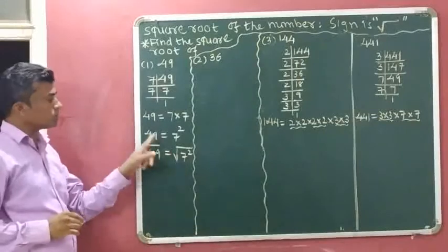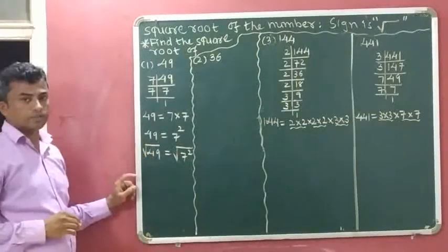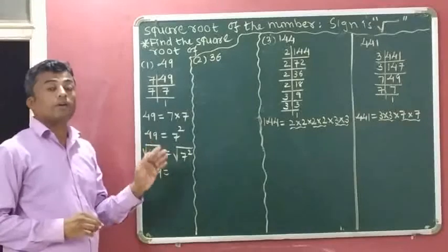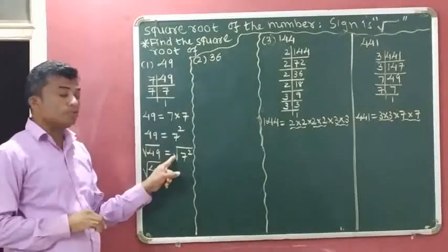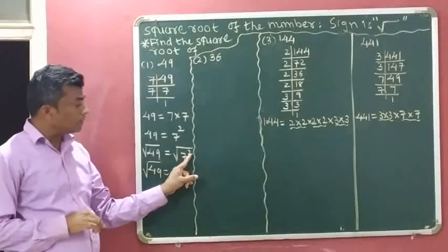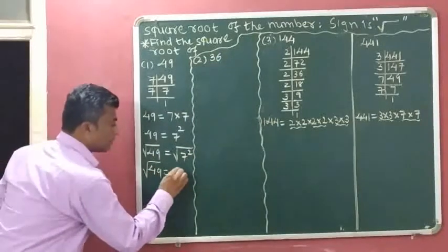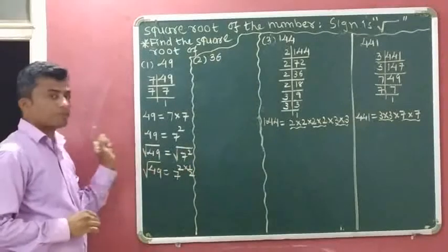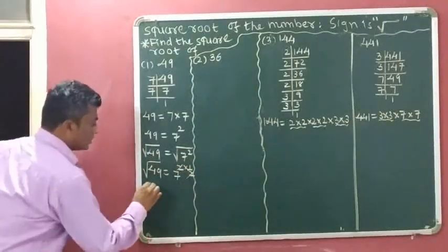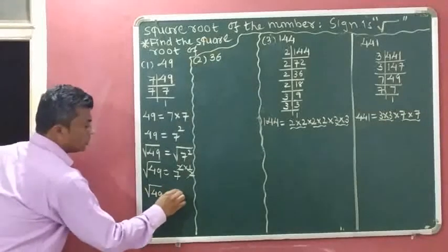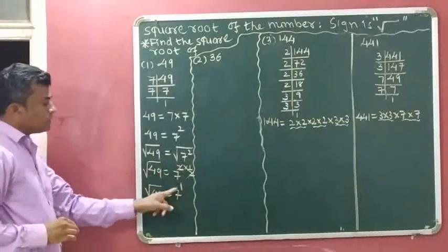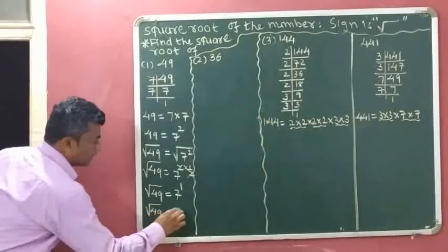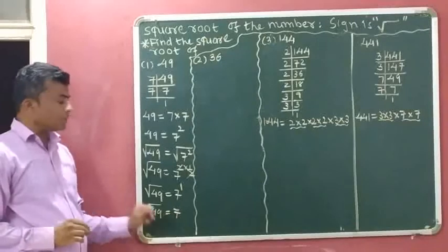Square root means 1 half. So we multiply 1 half with the exponent 2 in 7 squared. The 2 and the 1 half cancel each other, leaving 7 to the power of 1. So the square root of 49 is equal to 7.